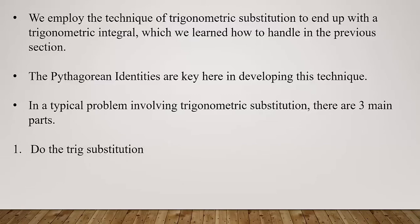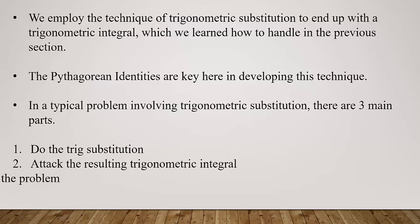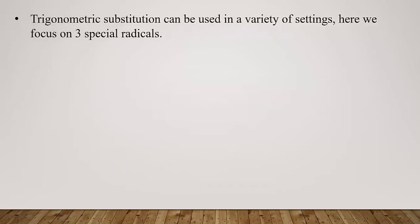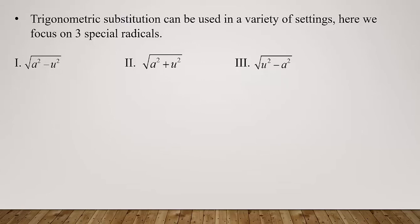Part one is we do the trig substitution, which allows us to attack the resulting trigonometric integral — that's part two. And then part three, we use right triangles to finish off the problem. Trig substitution can be used in a variety of settings, but for right now we're going to focus primarily on three special radicals: the square root of a² minus u², the square root of a² plus u², and the square root of u² minus a².